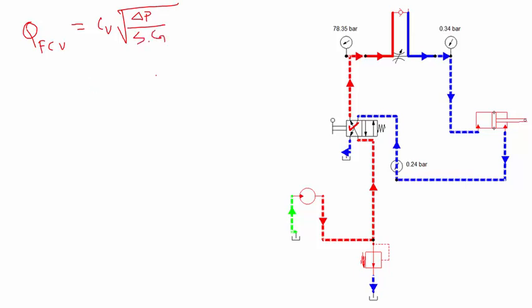Now delta P in this case, we have 78.345 bar. I have converted that to 11036.35 psi and I have converted this 0.34 bar to 4.9 psi.